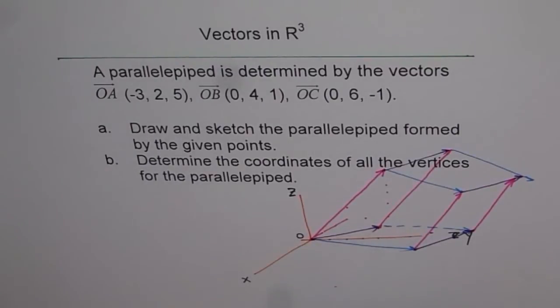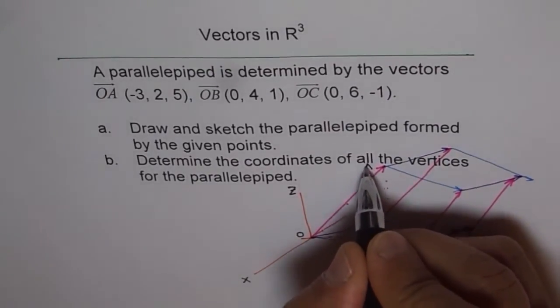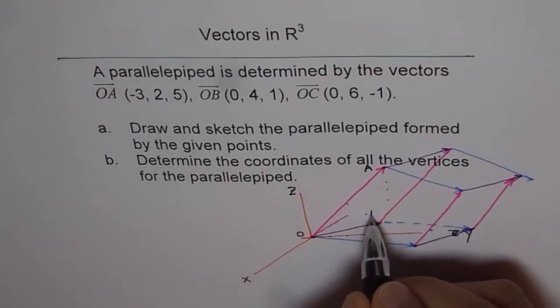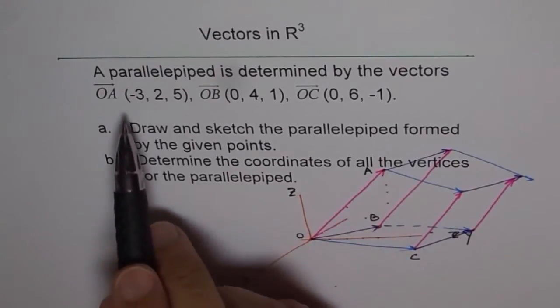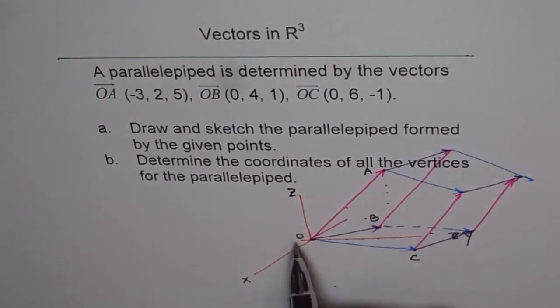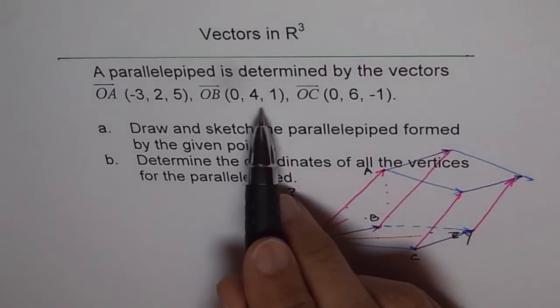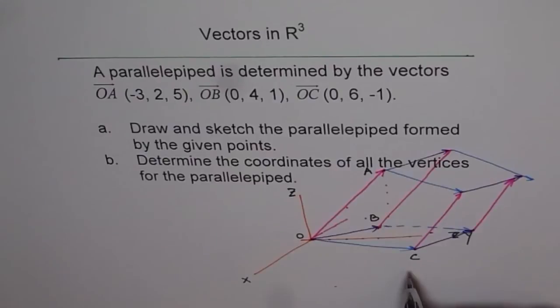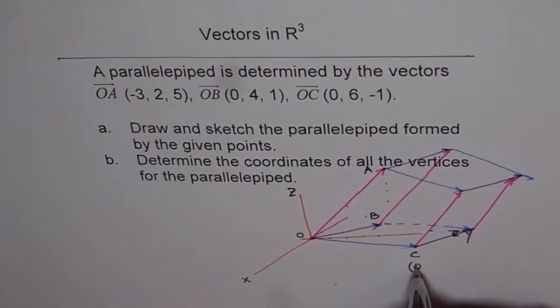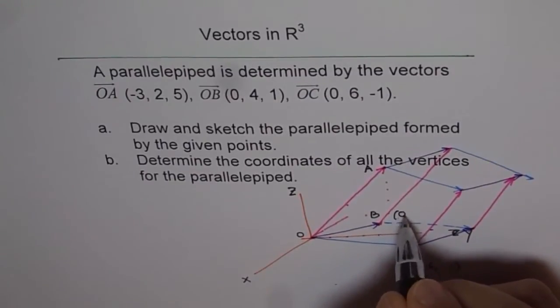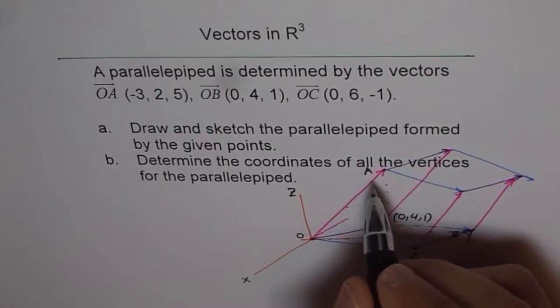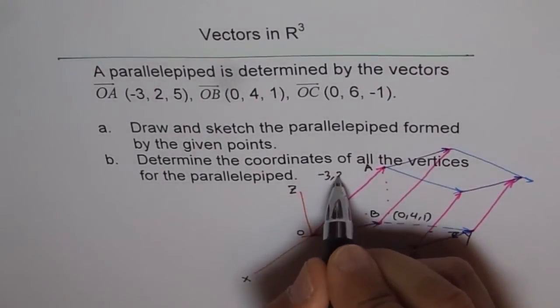It's not bad, but it just gives you an idea how to draw it. If you do with a scale, it could be a much better job. Now, O to A, let's label that. So O to A is this vector for us. O to B was this vector. And O to C is this. Now we know the points. OA is (-3, 2, 5). OB is (0, 4, 1). And OC is (0, 6, -1).